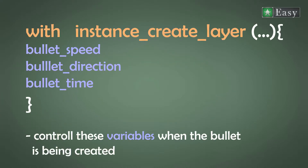In the brackets of the 'with' statement we need to define 3 new variables that we need to make: bullet_speed, bullet_direct, and bullet_time. Additionally we need to assign the type to bullet.